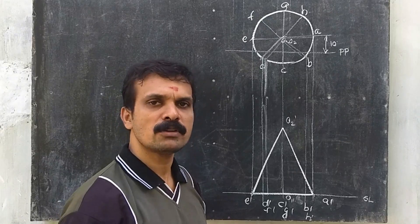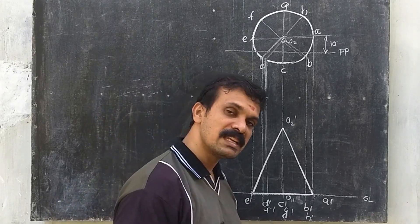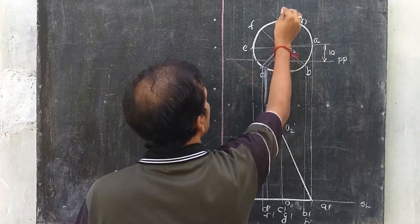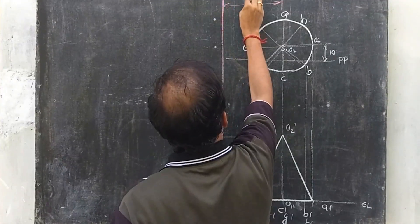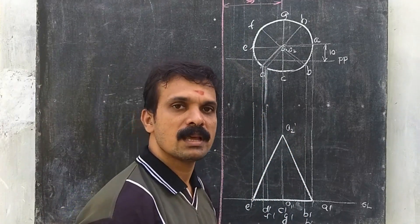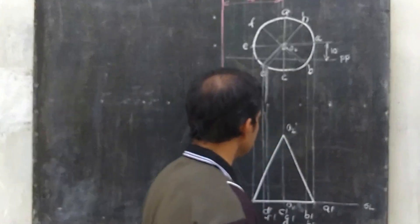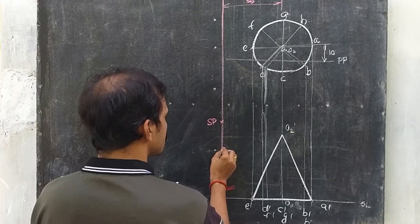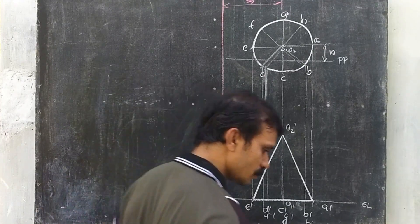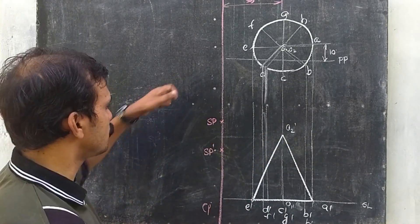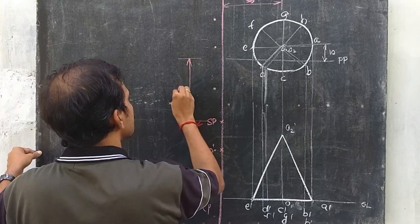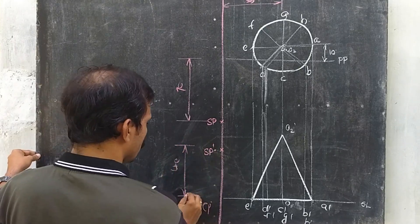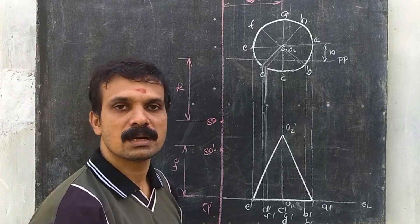The next step is to locate the central plane. The central plane is at a distance of 35 mm from the center of the cone. So this will be the central plane, with this distance equal to 35. Now, SP is 70 mm in front of the picture plane and SP' is 40 mm above the ground. So this will be 70 and this will be 40.